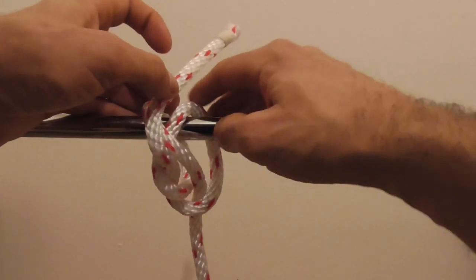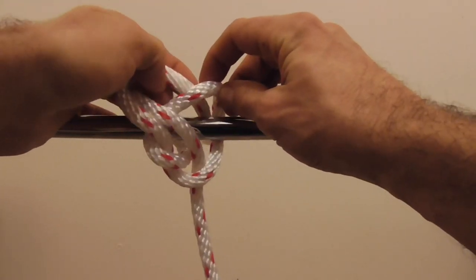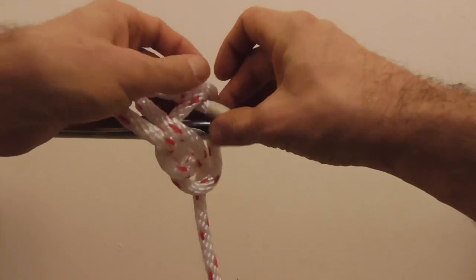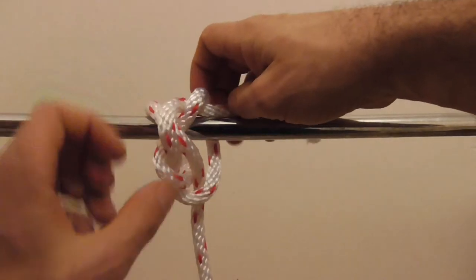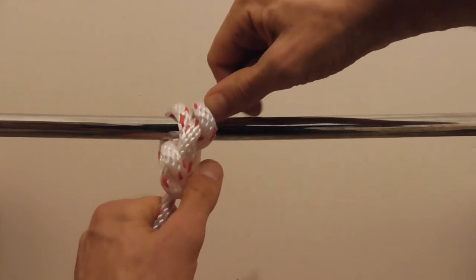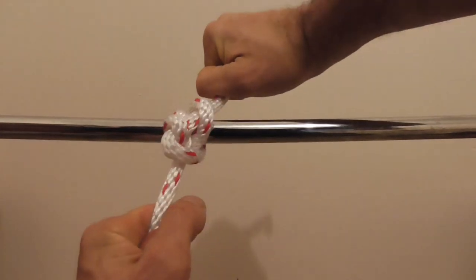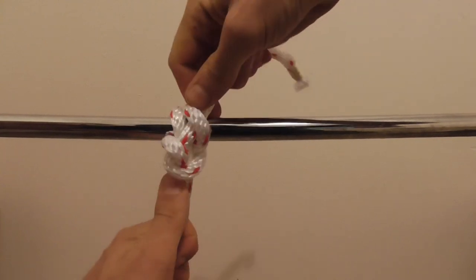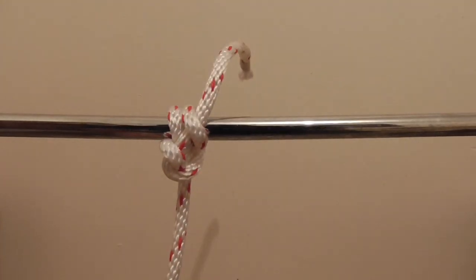So above that X through the upper right-hand loop, and then tug on the working end and the standing part of the rope to tighten the knot. That's the vibration proof hitch.